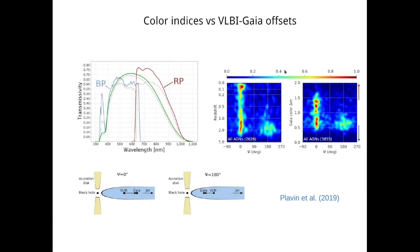This is another plot from Plavin et al. 2019. It supports the suggested interpretation of VLBI-Gaia offsets. This panel on the left shows the distribution of sources over the range of redshifts and the values of the angle between the VLBI-Gaia offset and the jet direction. It shows that the downstream offsets can be observed in sources with any redshift, while the upstream offsets occur only in sources with redshifts 1.5 and higher. This is well consistent with the fact that the accretion disk emission peaks typically around 110 nanometers, so it doesn't enter the Gaia bandpass until higher redshifts.